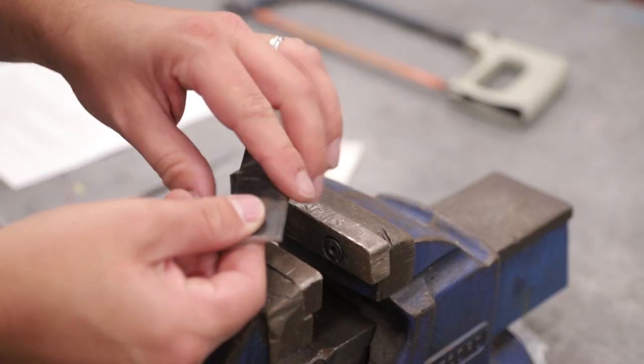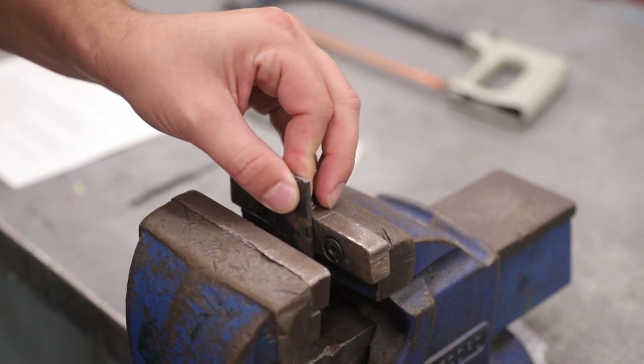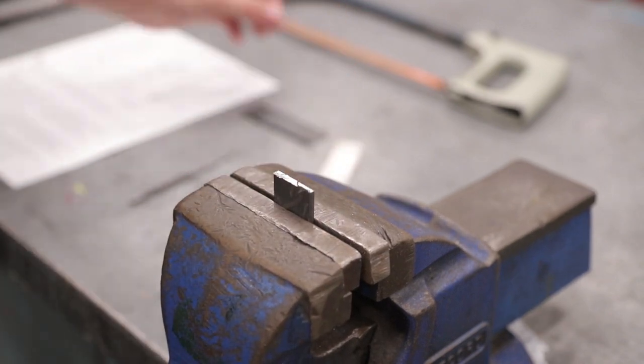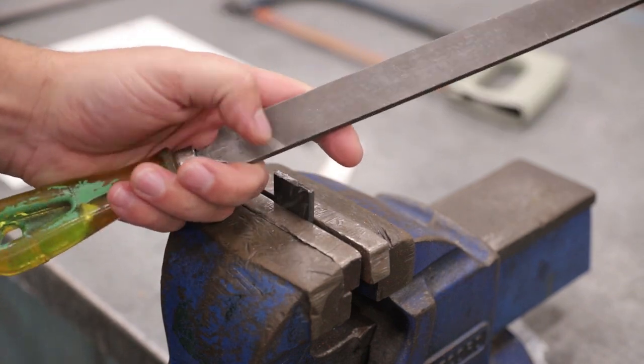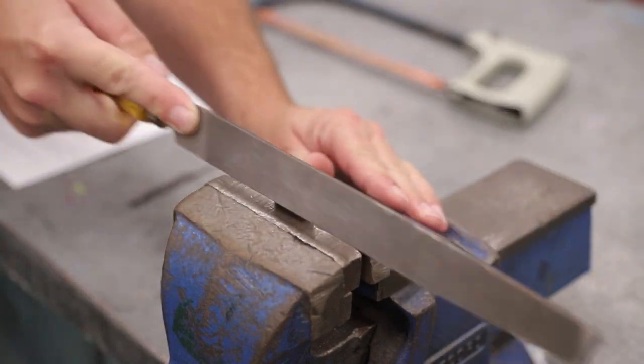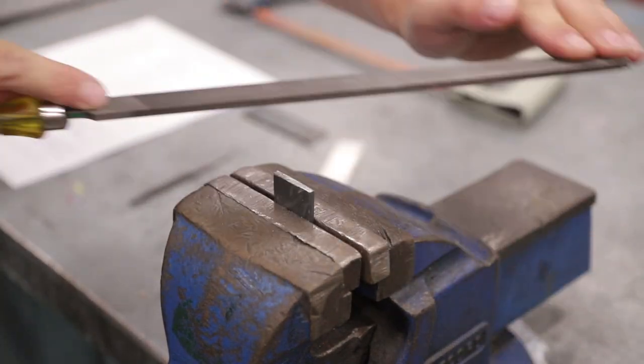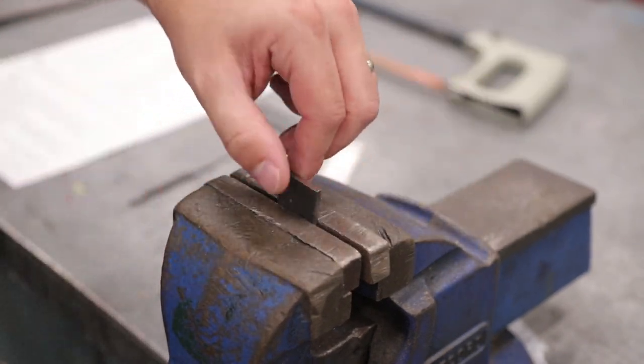The edges can be very sharp so we want to file those off so that we don't accidentally cut our fingers while we're working. Hold it in a vise, get a file of some kind. We're going to be using a mill bastard just to get that smooth and just round over your edges. Every time you cut something it's probably going to be a little sharp.